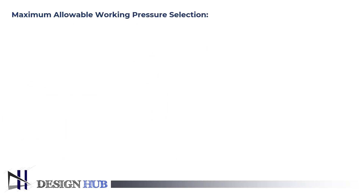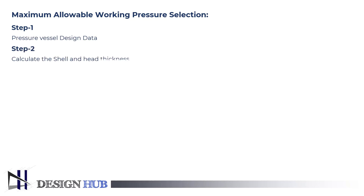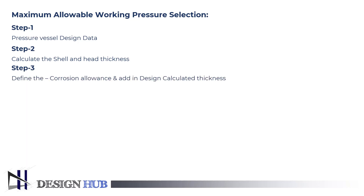Let us see how the selection of maximum allowable working pressure is done. The first step is to have pressure vessel design data, so as to be able to calculate the shell and head thickness. Then one should define corrosion allowance and add the calculated design thickness. Then add corrosion allowance and design thickness to get the total thickness.